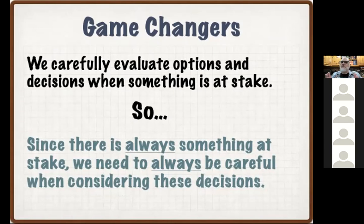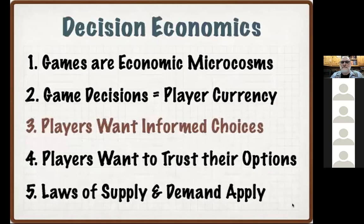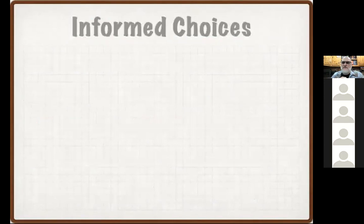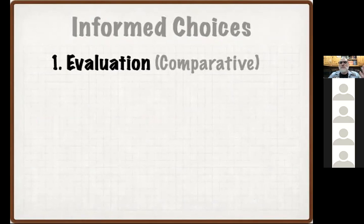Then we move on to: if I'm going to be making these decisions and we do have things at stake, then I want to make an informed choice. I want to know not only what my choices are, but all the different factors that are going to influence and affect those choices. I want to be an informed consumer. Having informed choices is incredibly important, but in order to have them, we need to consider exactly the type of choices or information we're looking for.